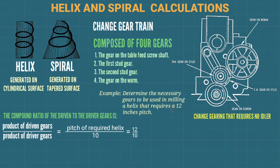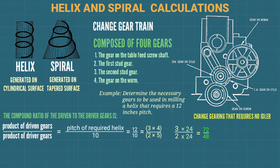To get 12, we use 3 times 4; to get 10, we use 2 times 5. Multiplying both numerator and denominator by 24: 3 times 24 equals 72, and 2 times 24 equals 48. For the denominator terms: 4 times 8 equals 32, and 5 times 8 equals 40.